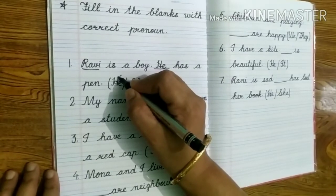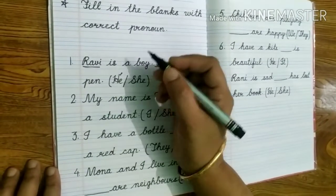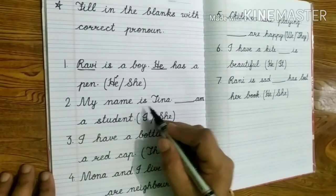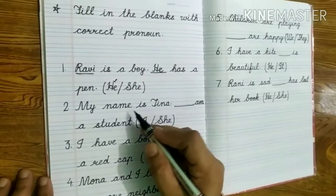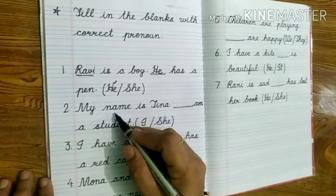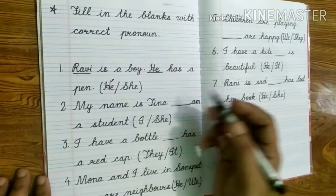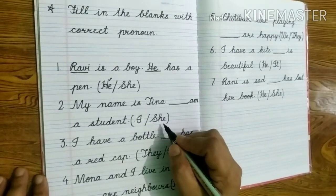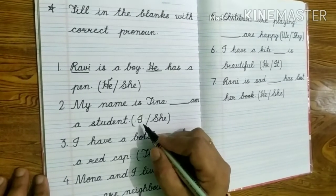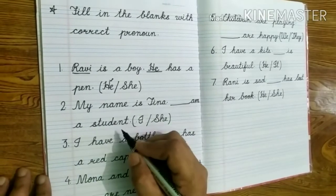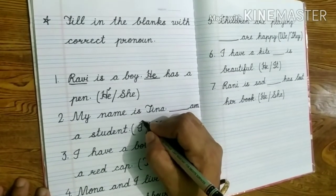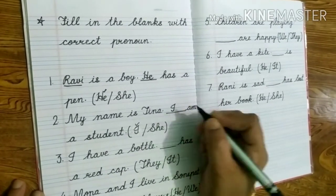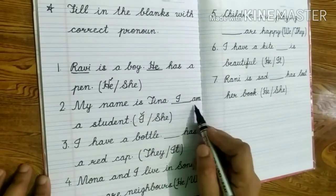We have to tick here also. Now the second one is: My name is Tina. Here Tina is talking about herself — she is telling her name. So we will use here I or she? We will use I. I am a student. So we will tick I here and then write down: My name is Tina. I am a student.